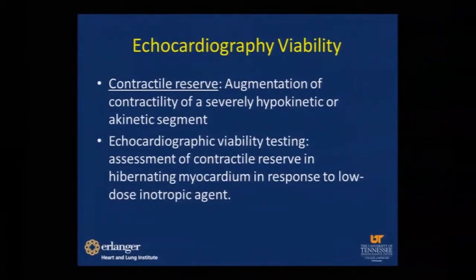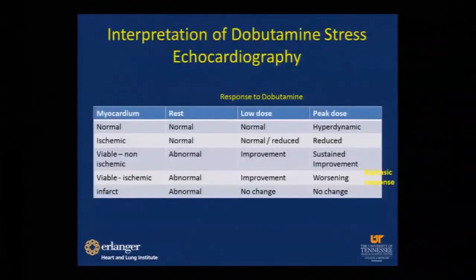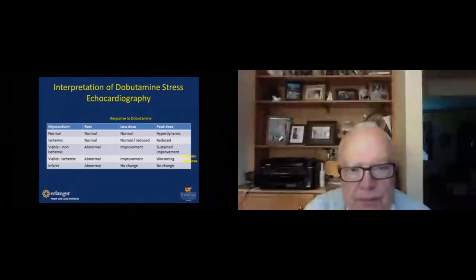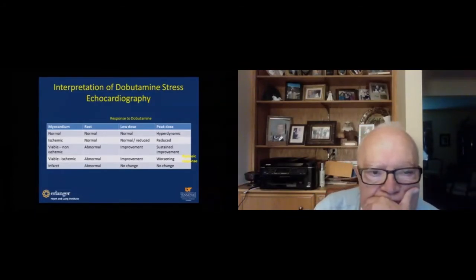Before we jump into echocardiographic viability, the concept of contractile reserve is important for everyone to understand. It's an augmentation of contractility of a severely hypokinetic or akinetic segment — that's the basis of echocardiographic assessment of viability. The protocol usually starts with low-dose stimulation; images are acquired at low-dose dobutamine, usually 2.5 or 5 micrograms, and then subsequently at the peak level.